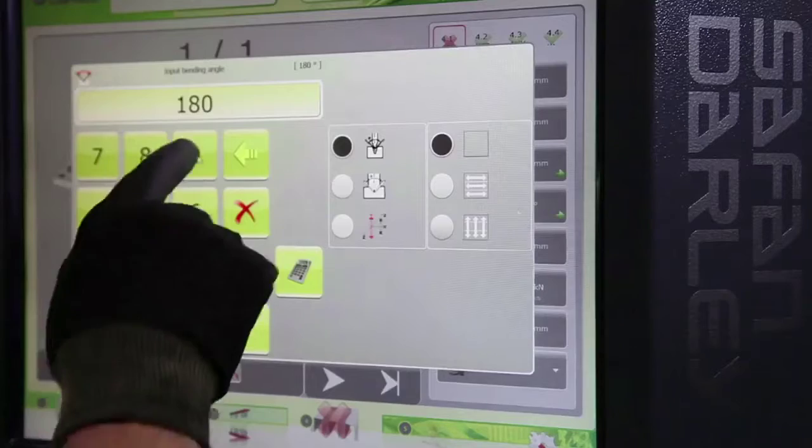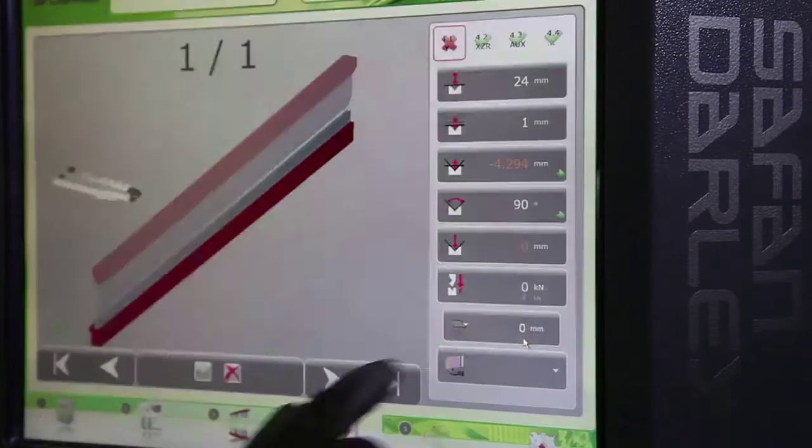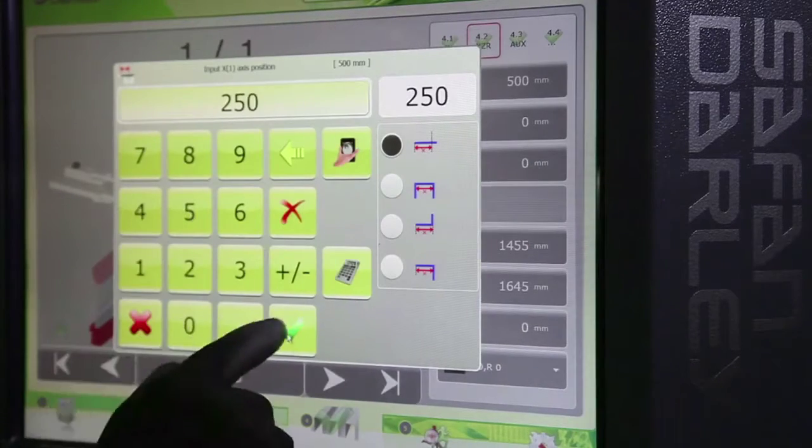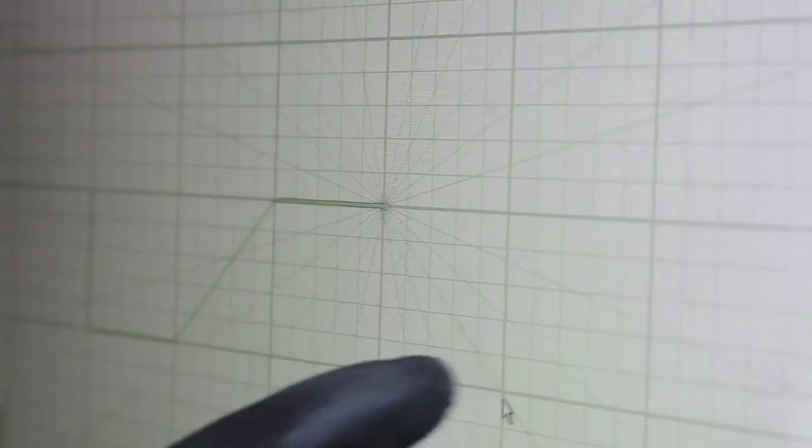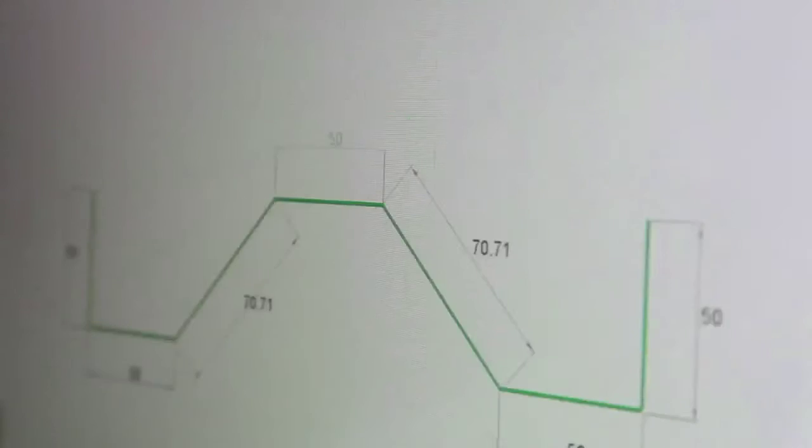The e-brake ergonomic comes as standard with a Safan Dali e-control. The B version comes as standard with a numerical EC10 control, and optionally you can choose the 2D graphical EC20 control.